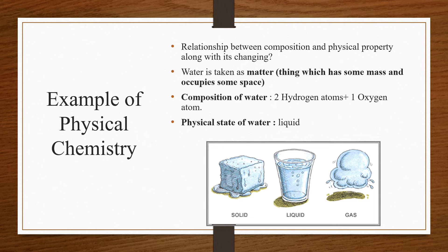If we heat water — which is in liquid form — it will convert into gas. So water's physical state was first liquid, and after heating, its physical state becomes gas. This means the physical property has changed into gas, but its composition remains the same — H2O, two hydrogen atoms and one oxygen atom. Similarly, if we freeze liquid water by decreasing its temperature, it will convert to solid ice, but its composition H2O will still remain — two hydrogen atoms and one oxygen atom.